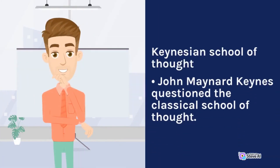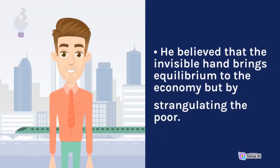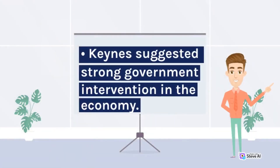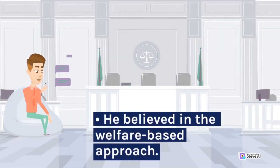The Keynesian school of thought: John Maynard Keynes questioned the classical school of thought, challenging the principles of laissez-faire and the nature of the invisible hand. He believed that the invisible hand brings equilibrium to the economy but by strangulating the poor. Keynes suggested strong government intervention in the economy and believed in a welfare-based approach.